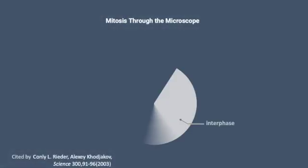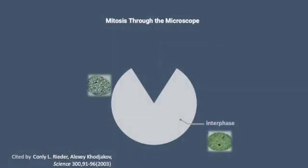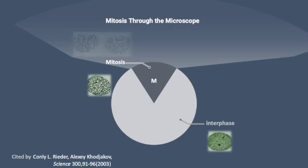During the interphase, individual chromosomes are not visible under the microscope. Chromatin is extensively condensed as cells enter mitosis.